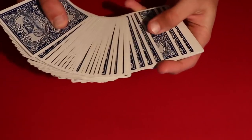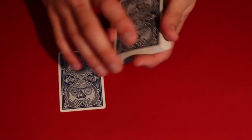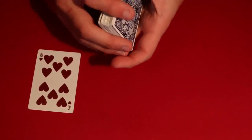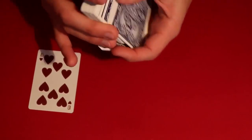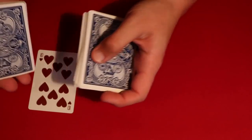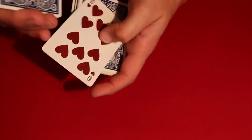So you go ahead and you have the spectator pick any card that they want to, and let's say in this case it's a 10 of hearts. So you go ahead and what you do is tell your spectator to tell you when to stop, and all you're doing is a regular overhand shuffle. And the moment they tell you to stop, I'll leave the card right here.